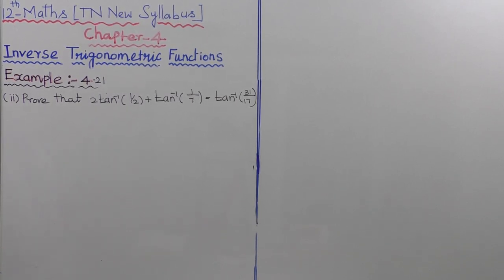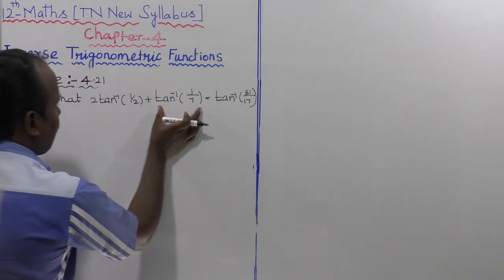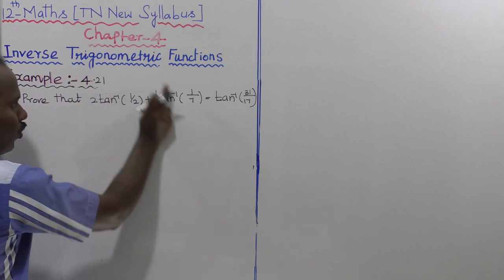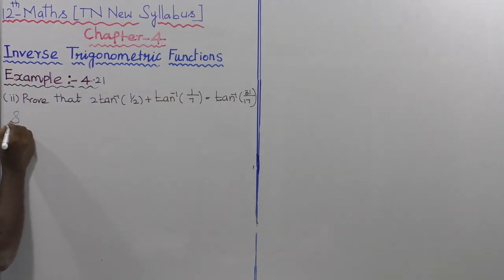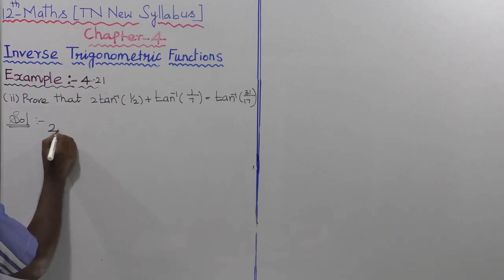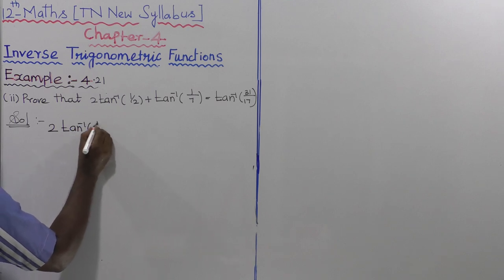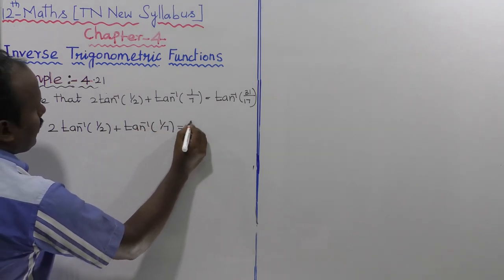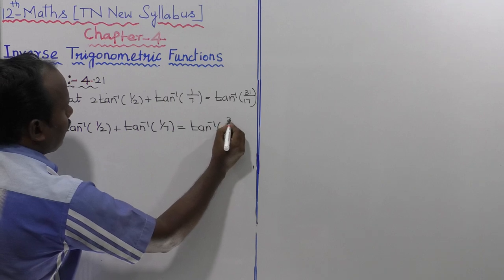Example 4.21, second subdivision. Prove that 2·tan⁻¹(1/2) + tan⁻¹(1/7) is equal to tan⁻¹(31/17). The given expression is 2·tan⁻¹(1/2) + tan⁻¹(1/7) = tan⁻¹(31/17).